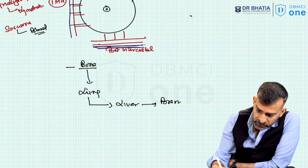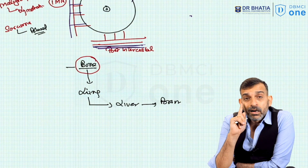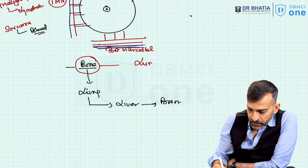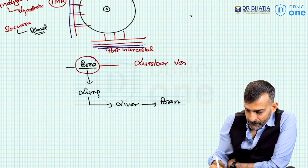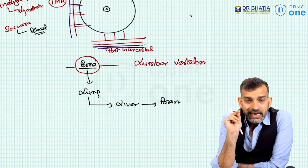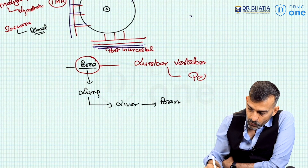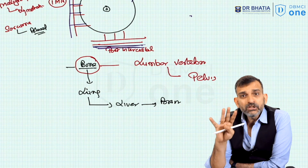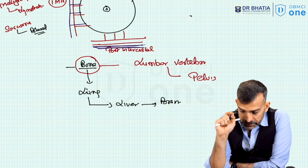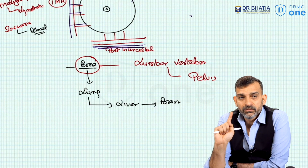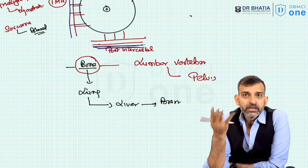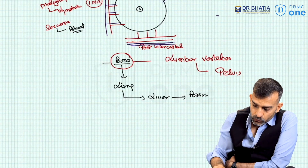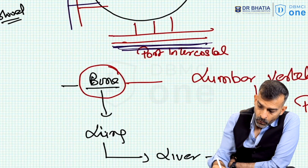The metastasis of breast carcinoma most commonly goes to bone. A very commonly asked exam question is: which bone does it go to? It mainly goes to the lumbar vertebra first, and can also go to the pelvis, but the lumbar vertebra is the primary site. Another important exam question is: how does this metastasis reach the vertebra?